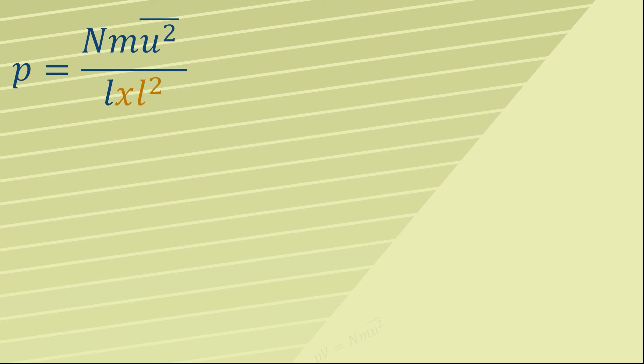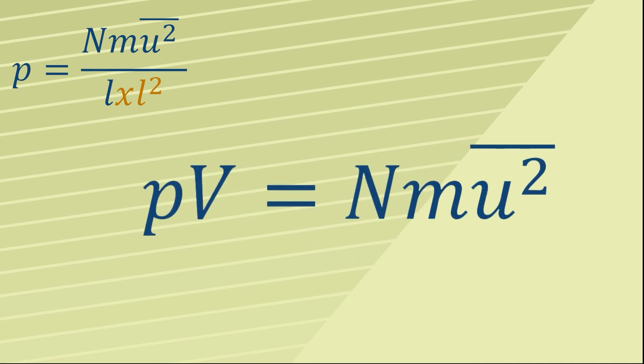Rearranging this leads us to a really simple and powerful formula: pressure times volume equals n m mean square speed.